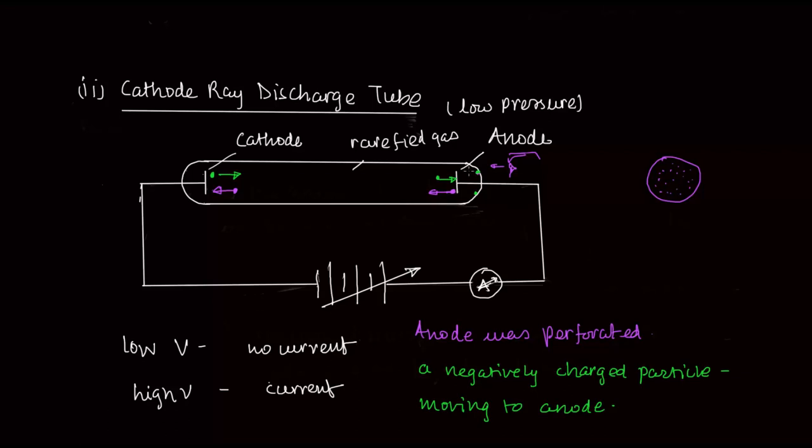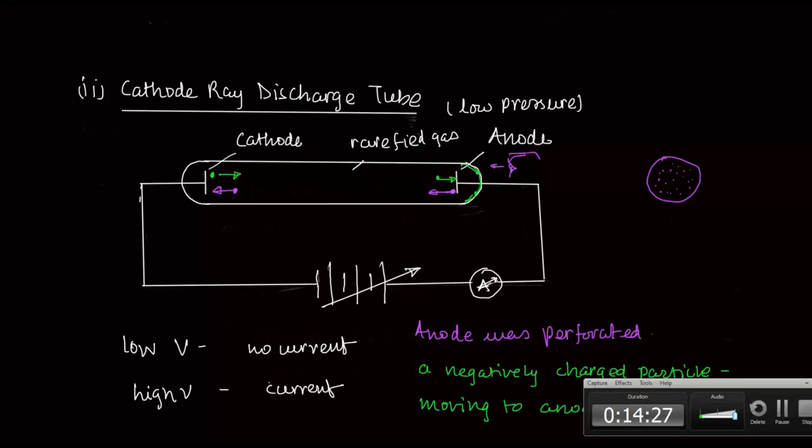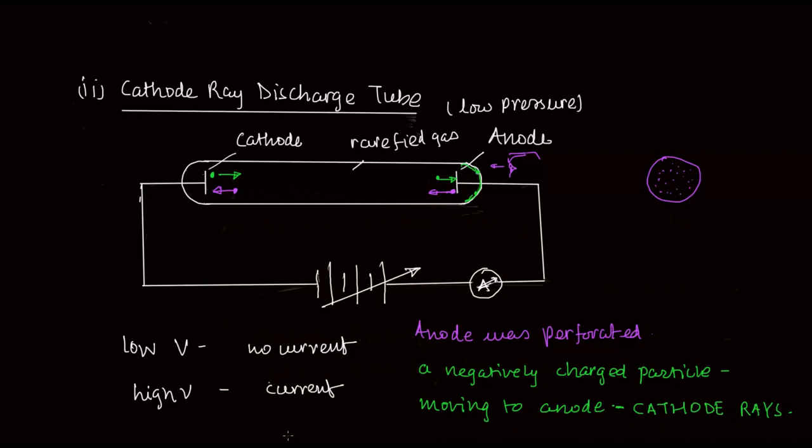They also put a zinc sulfide screen out here and you know that zinc sulfide has got phosphorescence, so if something strikes it, it glows. Also, the particles that were hitting here, they were dependent on the kind of glass that you were using. So many multiple experiments were done and it was pretty well established that there is a negative particle that is coming from here and hitting here. And since its origin was the cathode, we called it the cathode rays.